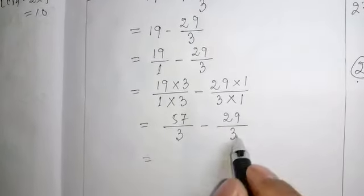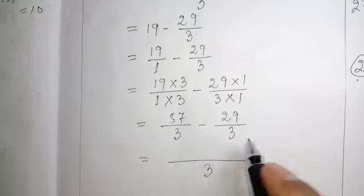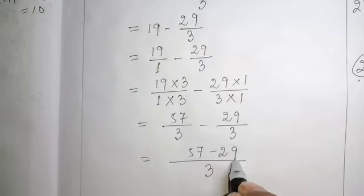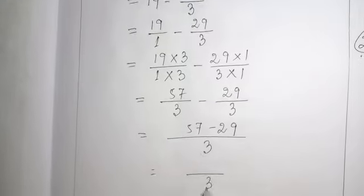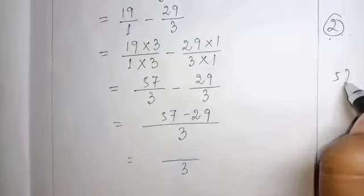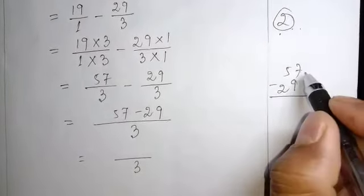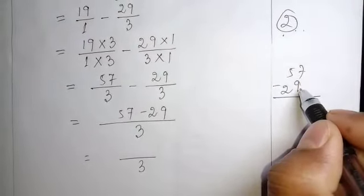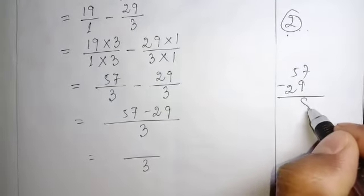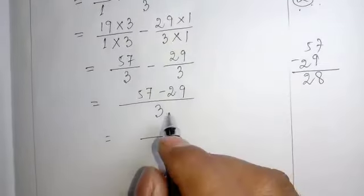Now their denominators are same. We can subtract their numerators. 3, 57 minus 29 is how much? 17 minus 9 is 7, 8. 1 is taken away. 4 minus 2 is 2, 28.